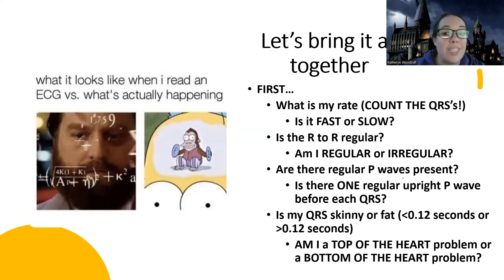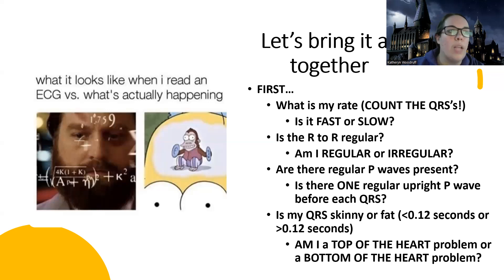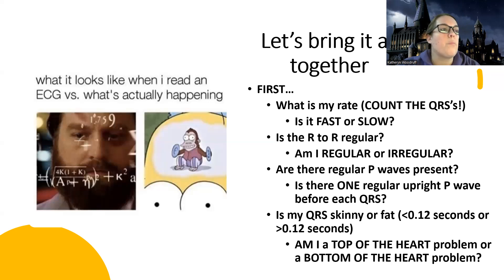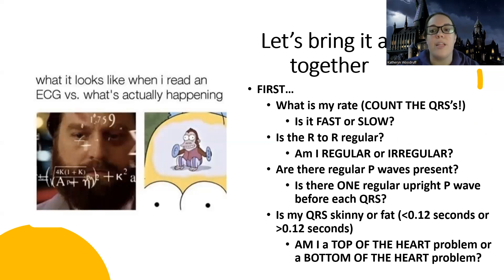Then regular P waves — is there a top-of-the-heart problem? Regular P waves can tell me a lot about whether I'm looking at atrial fibrillation or maybe a ventricular rhythm where I'm missing my P waves. And then the other thing is looking at the QRS — is it skinny or fat? Each of these details will provide key information, and then we'll do some practice together.